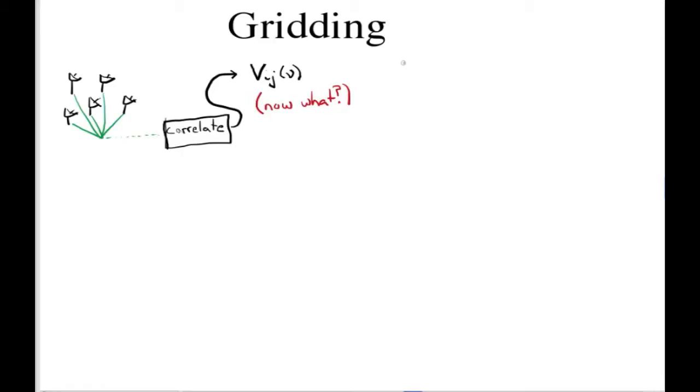We know basically from a previous lecture on synthesis imaging that in principle, these samples represent samples of the UV plane, and so we would like to put those down on the UV plane in the appropriate place so that we can Fourier transform that UV plane and get a picture of the sky in L and M coordinates.